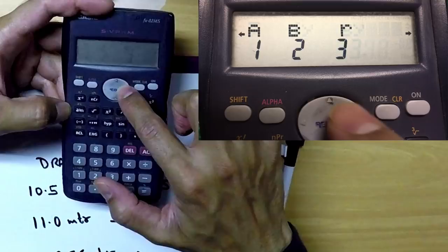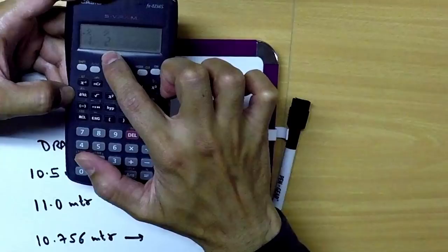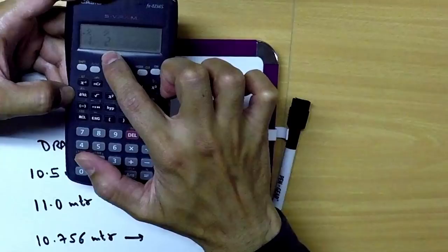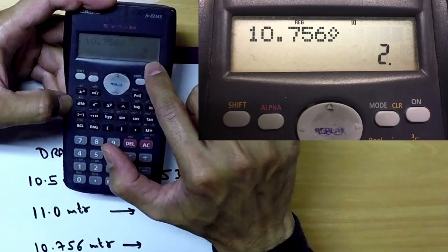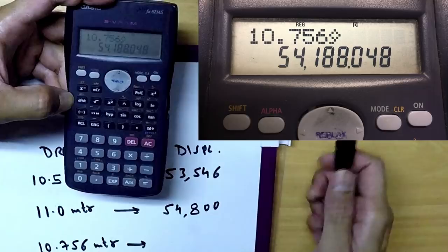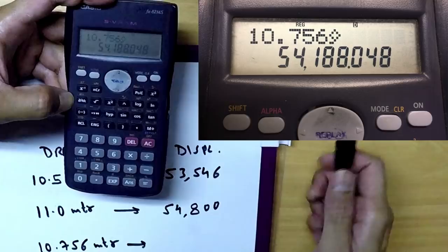Right at the end, you have this symbol here and 2. So you again press 2, and now you needed a corresponding displacement for draft 10.756. So as we can see here that symbol is here 2. All you have to do is press 10.756 equal to, and now we got the result: 54,188.048.